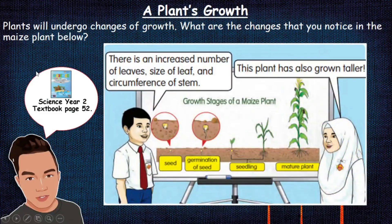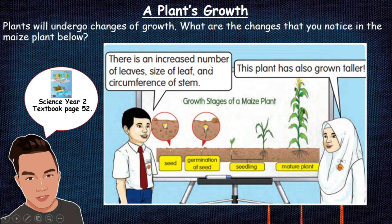On page 52 you will see a picture. Let's discuss this together — this is about the growth stage of a maize plant. Plants will undergo changes of growth. What are the changes that you notice in the maize plant? This is the growth stages of the maize plant — maize is jagung. It grows from the seed, and after germination of the seed, it grows into seedlings, and the final stage will be the mature plant.